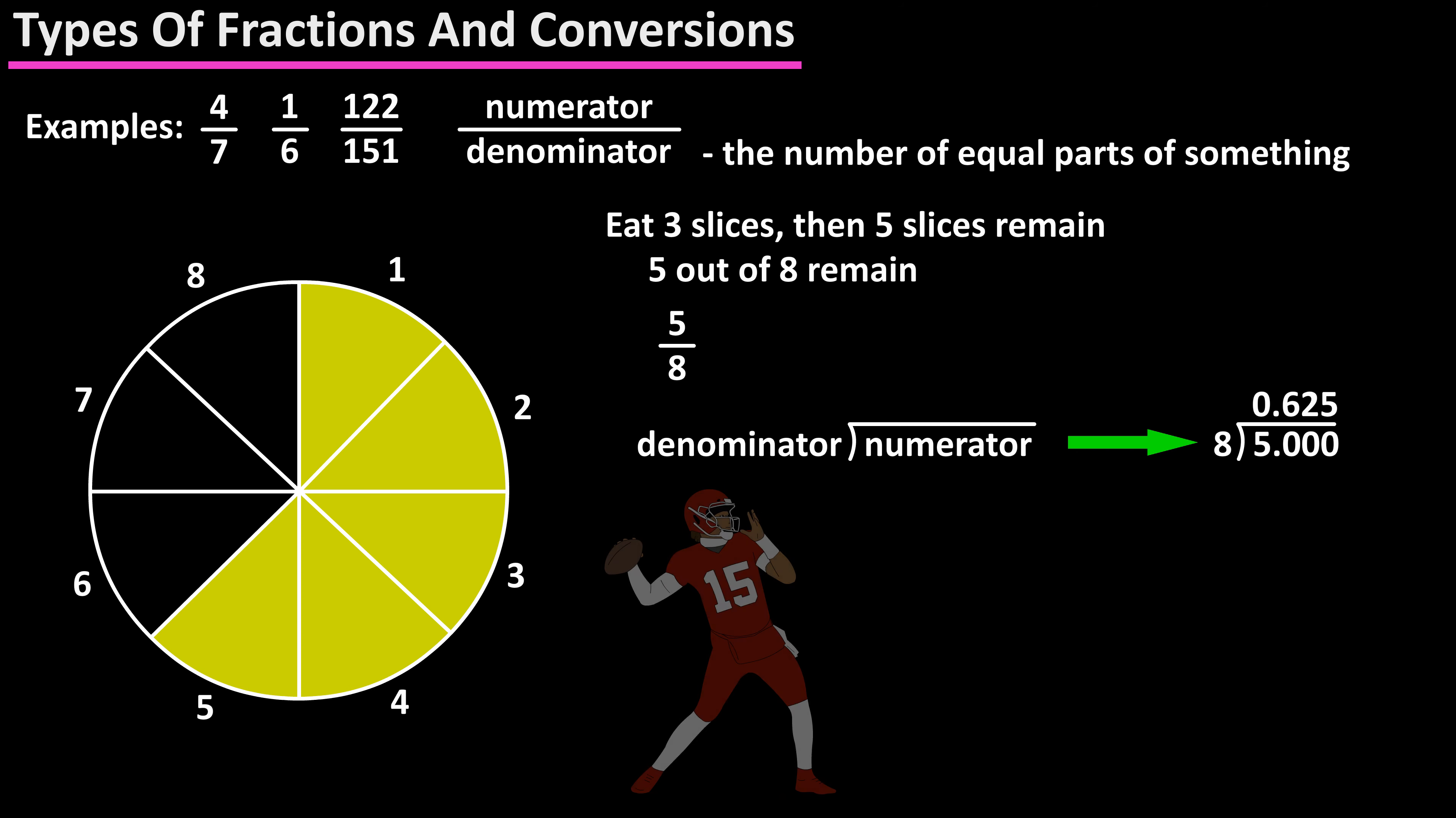For instance, if a quarterback threw 30 passes and completed 18 of them, then 30 is the total number of parts so it goes in the denominator, and 18 is the number of successful completions so it goes in the numerator. 18 divided by 30 equals 0.6, and 0.6 times 100% equals 60%. There are three main types of fractions.